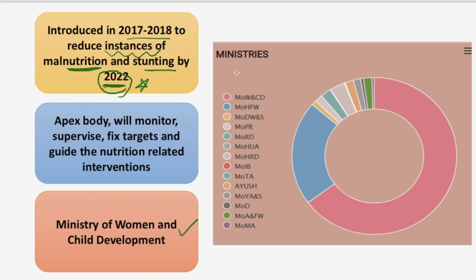Multi-ministerial means that it is governed by many ministries. The largest part, shaded in pink, is the Ministry of Women and Child Development. You must know at minimum this ministry, but you must also know that it is a multi-ministerial convergence mission. The mission aims to drastically reduce the prevailing high incidence of malnutrition, stunted growth, and anemia through convergence, mass movements, and leveraging technology. Remember the year 2022, the multi-ministerial mission, and this ministry's name.